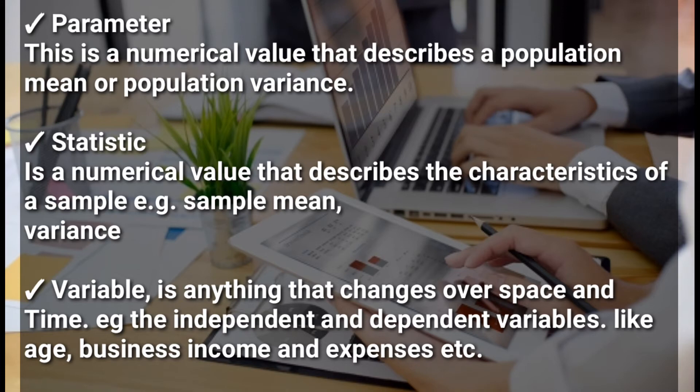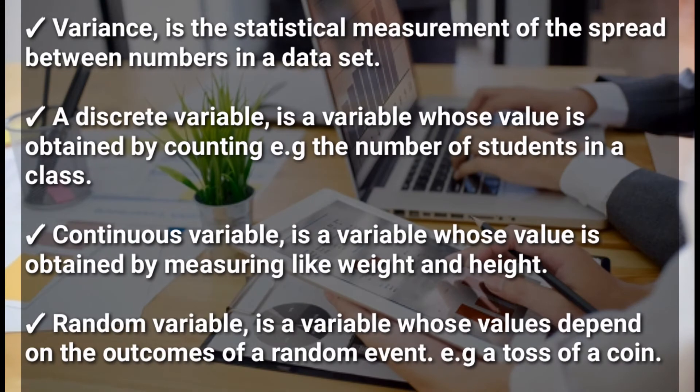Another term we have is a variable. A variable is anything that changes over space and time. A variable can be independent or dependent — an example is age, which changes with time, or business income and expenses. Variance refers to a statistical measurement of the spread between numbers in a data set; it measures how far each number is from the mean.